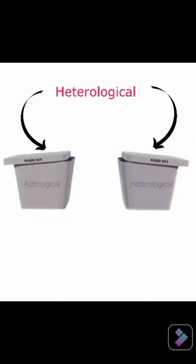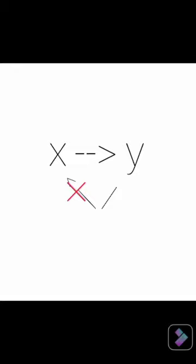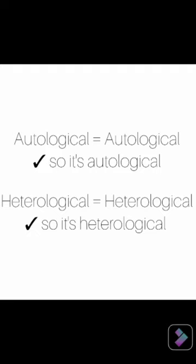The second is static logic, which means if X causes Y, then Y can't cause X — so based on this, you can't place these words into themselves. The third is just simple: 'auto' is auto, so it's autological, and 'hetero' means hetero, so it's heterological.